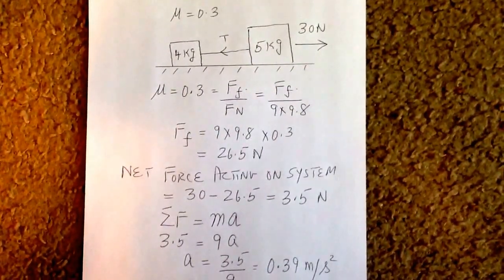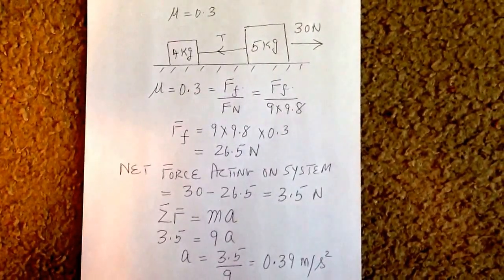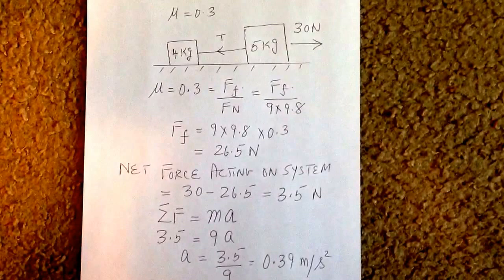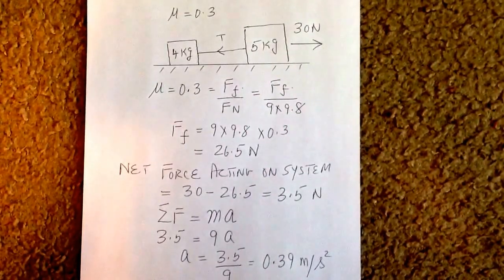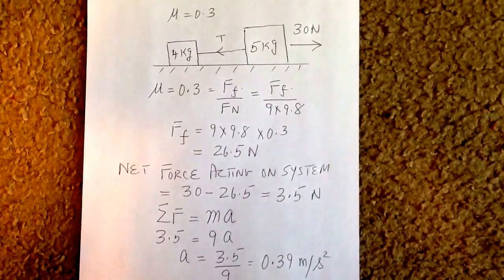By definition, the coefficient of kinetic friction is the force of friction divided by the normal force. The objects sitting on the table are 4-kilogram and 5-kilogram.